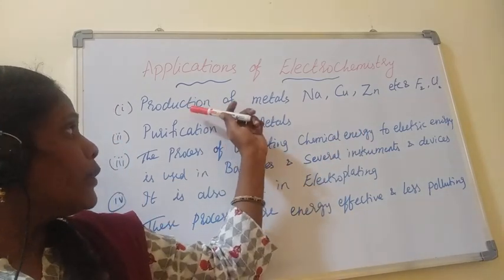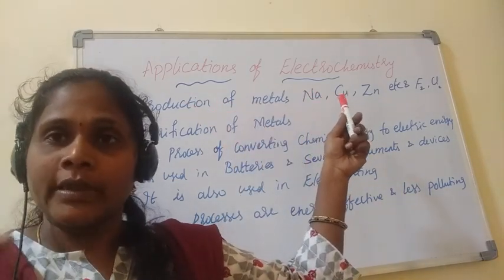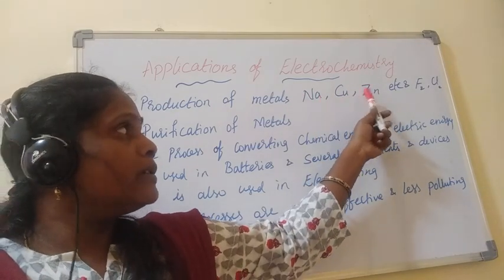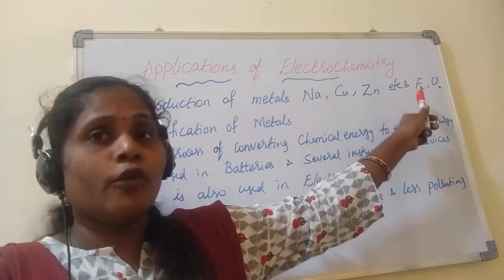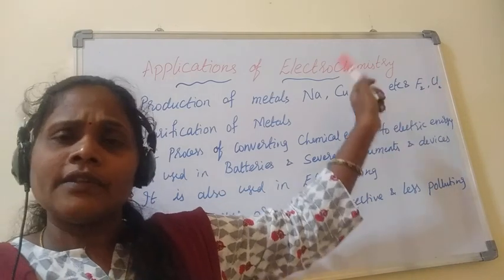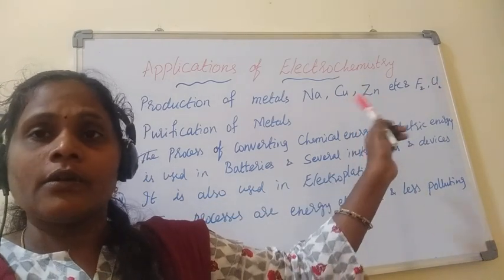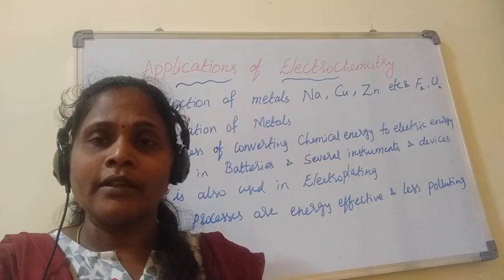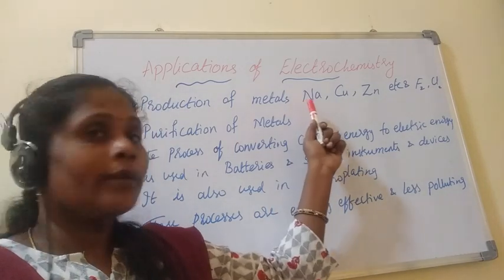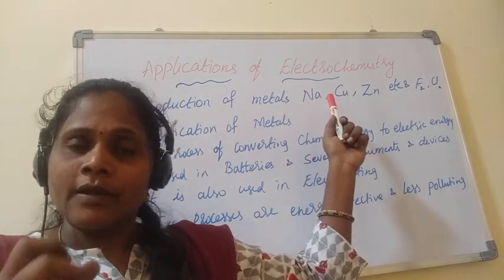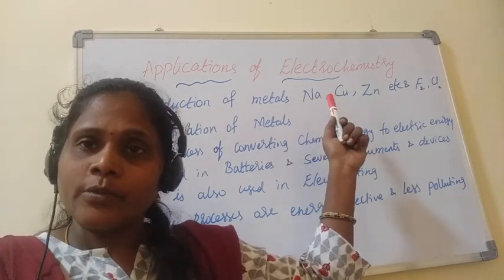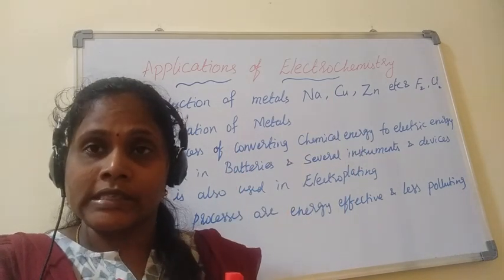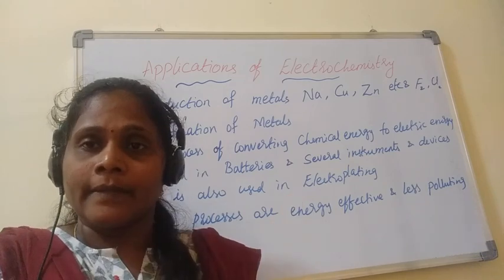Not only that — production of metals. Metals are very important: sodium, copper, zinc, and non-metals like fluorine and chlorine are also extracted. From crude material we extract the metal we want. For example, sodium chloride is widely available; chlorine has to be removed to get the metal sodium. So we do electrolysis to get that metal. Not only extraction — for purification of metals also we require electrochemistry, i.e., electrolysis processes.